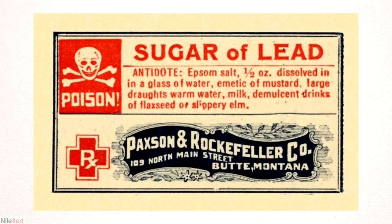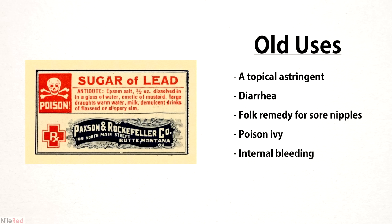By the 19th century, people were well aware that lead was toxic, but it was still commonly used in medicine. Lead acetate was found in many pharmacies, and it was mostly used to treat intestinal problems like diarrhea. It apparently works pretty well in small doses, but a lot of people accidentally poison themselves.